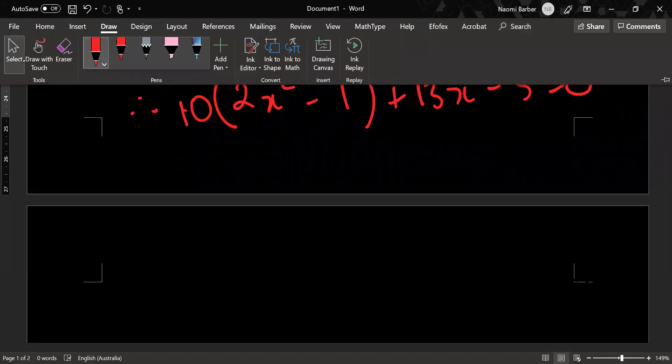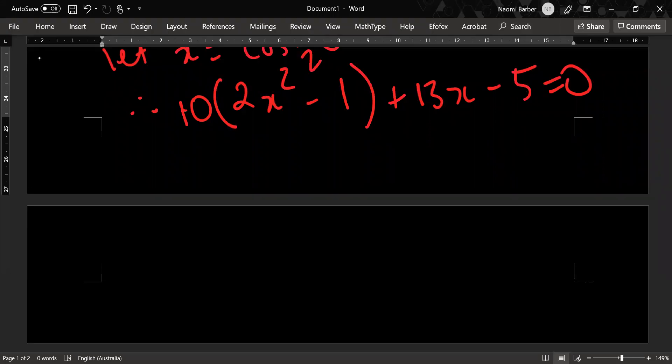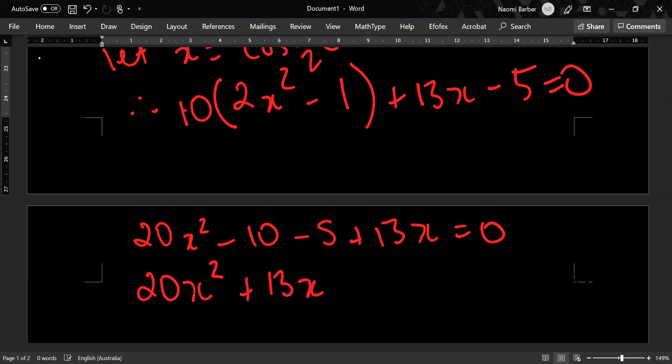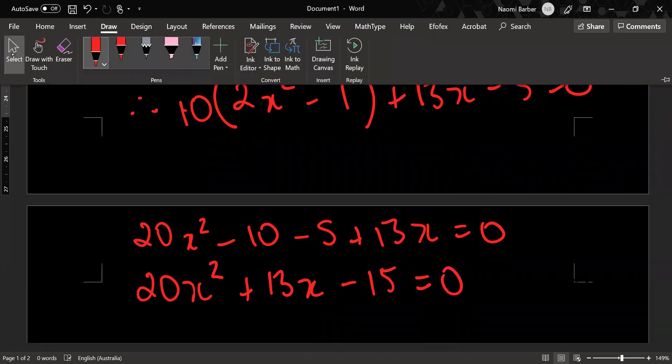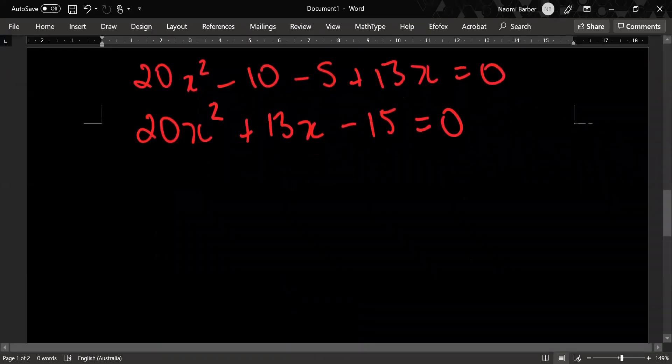Let us make neater maths. So I have 20 x squared minus 10 minus 5 plus 13x equals 0. Move it around so that it's in an orderly fashion. 20x squared plus 13x minus 15 equals 0. Let us make more room again.